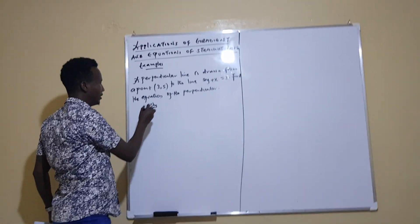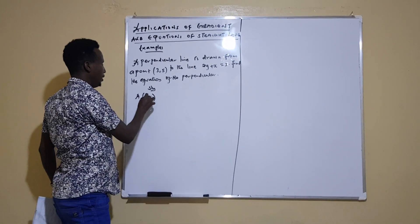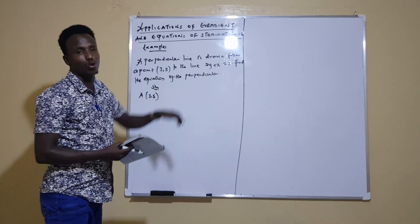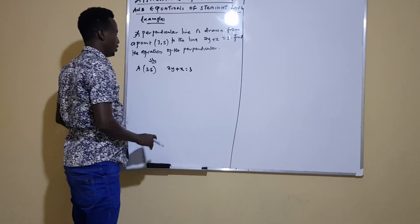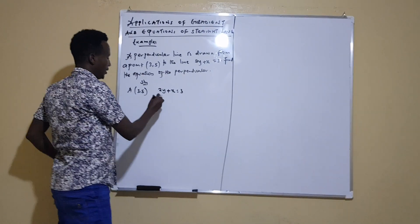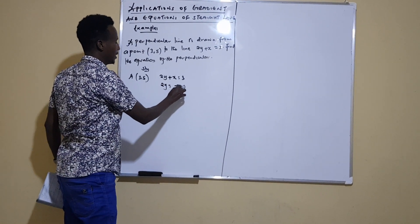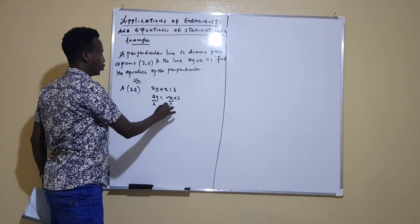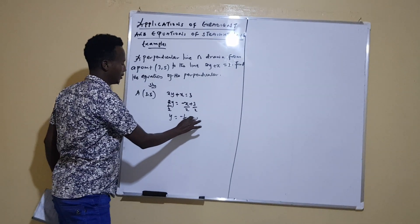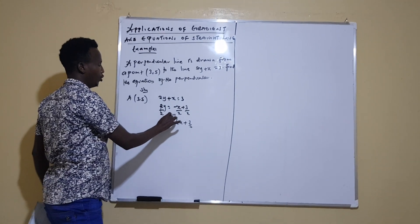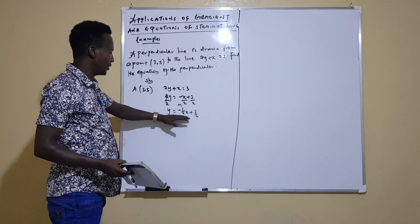In the solution, we have a point — let's call it f(3, 5). The line which passes through this point is perpendicular to the given line, whose equation is 2y plus x equals 3. We rewrite this equation in the form y equals mx plus c. So 2y equals negative x plus 3, then dividing both sides by 2 gives y equals negative one-half x plus three-halves. This gradient is called m1.